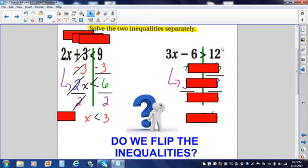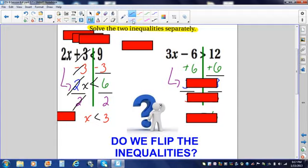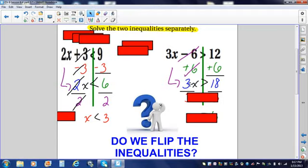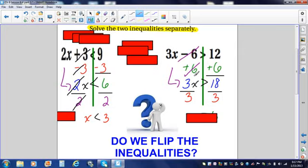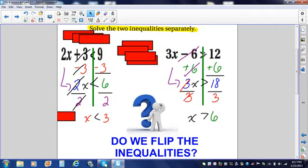Now, let's solve our other inequality. I'm going to add 6 to both sides. These cancel. 12 plus 6 gives me 18. Bring down the 3x. Divide both sides of your inequality by 3. 18 divided by 3 gives us 6. Bring down your inequality. Bring down the variable x.